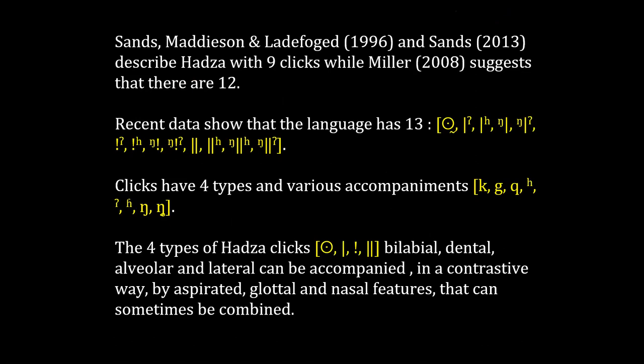Previous works done on Hadza were done by Sands, Madison, and Ladefoged. Sands described Hadza with nine clicks, while Kirk Miller suggests that there are 12. Recent data show that the language has in fact 13 clicks that are displayed here. Clicks have four types and various accompaniments that will be displayed a little bit later in this presentation.